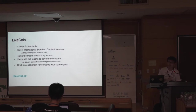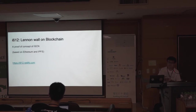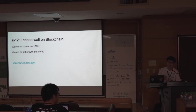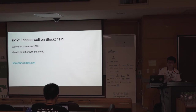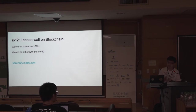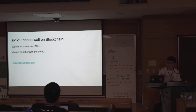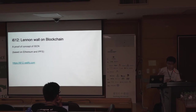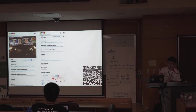Lite.co is our website. If you are interested, you can have a look. Recently, as you may have noticed, there is a large political event in Hong Kong. There are a series of events, and therefore we want to make a proof of concept of ISCN for recording events on the blockchain. So we made a POC of ISCN using Ethereum and IPFS. It is called the i612 project, which is basically a nano wall on blockchain — everyone can stick their contents onto the blockchain to record something related to the event. You can scan the QR code to see the current result.